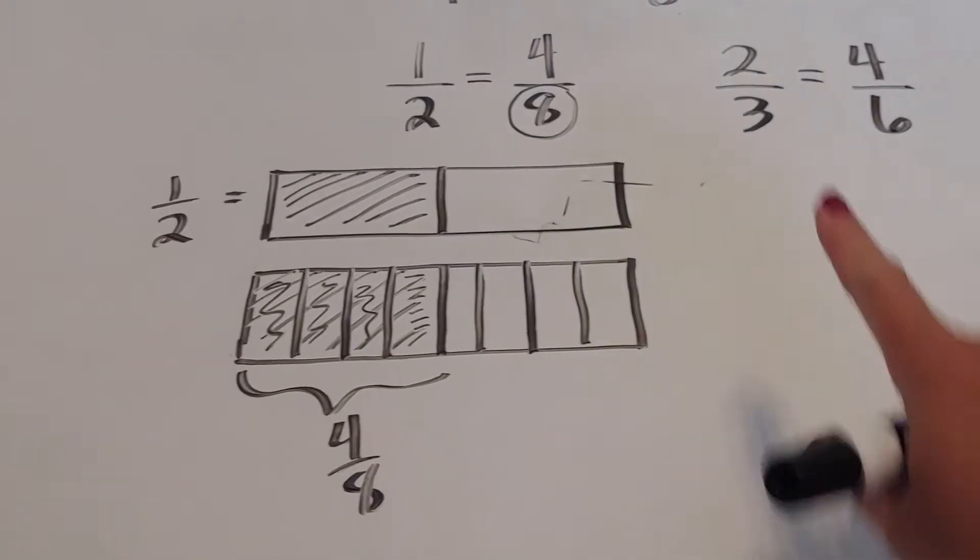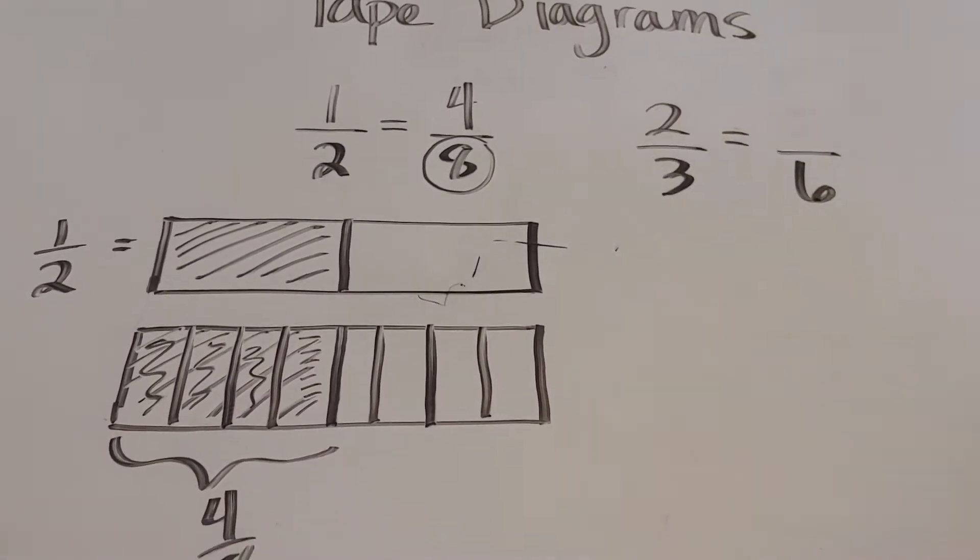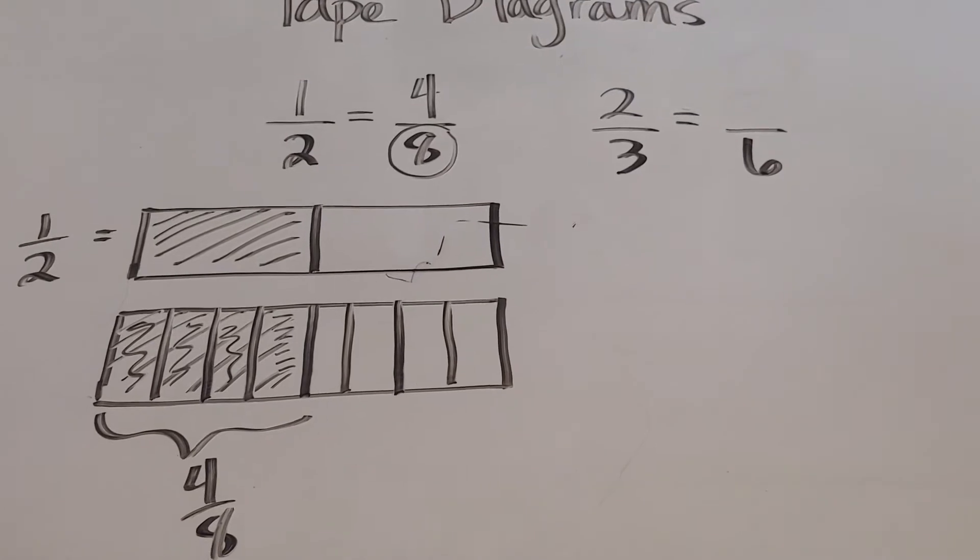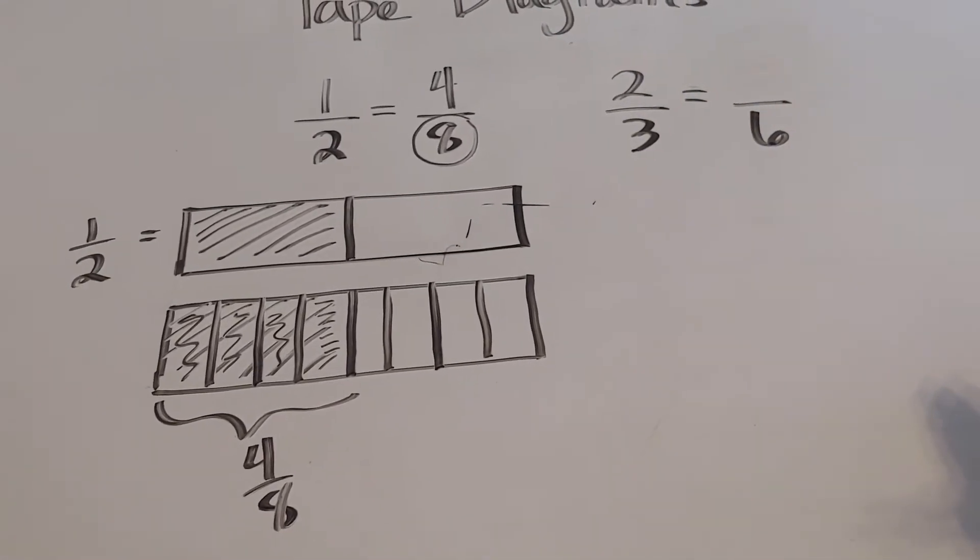Let's try it again over here. Again, we know what our answer should be, that two thirds should equal four sixths. But we're going to try it with tape diagrams.